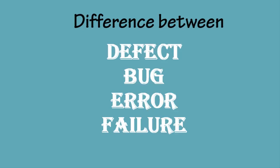Hi friends, this is Summa from softwaretestingmaterial.com. In this video we are going to see the difference between defect, bug, error, and failure. In general, we use these terms whenever the system or application acts abnormally — sometimes we call it an error, sometimes a bug, and so on. Many newcomers in the software testing industry have confusion in using these terms.